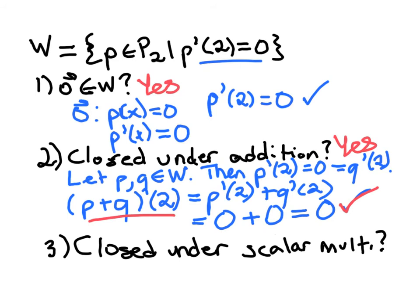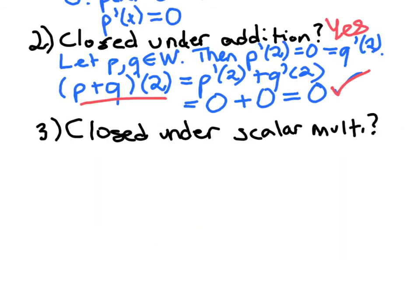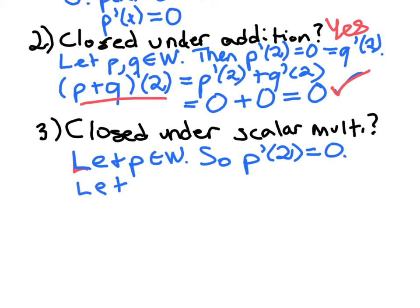Okay, so last question. Is it closed under scalar multiplication? I'm trying to get myself a little room to show this. Okay, so let's go with the same P that's some element of W. Let P be an element of W. So we know that P prime at 2 is 0. Let's let C be any number.